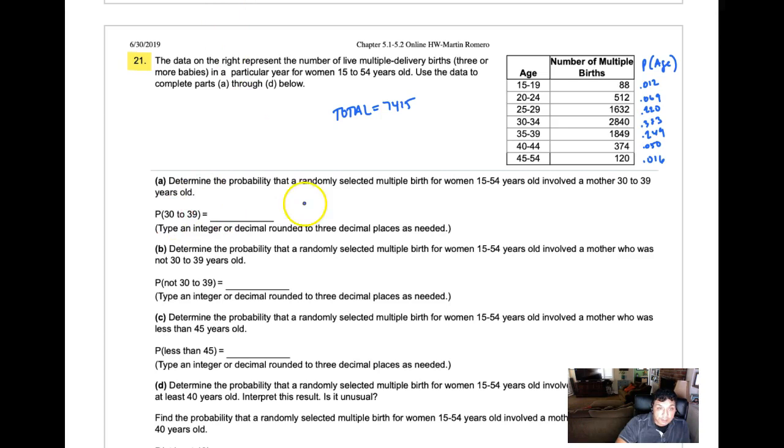What's the probability that if you randomly select a woman involved with multiple births, the mother is 30 to 39 years old? We're looking at those two categories here. To get this answer, you're going to add those two numbers: 0.383 plus 0.249.